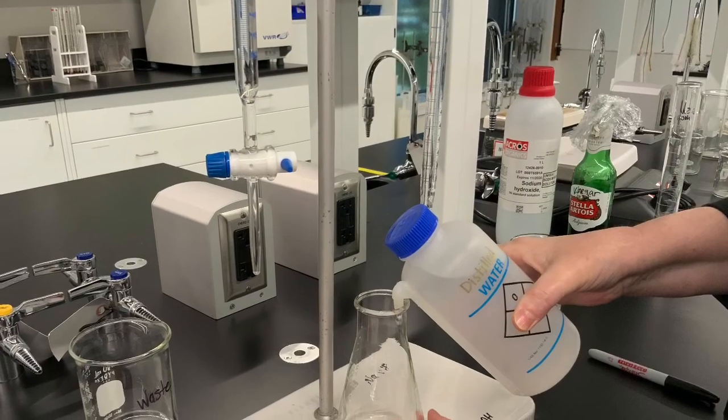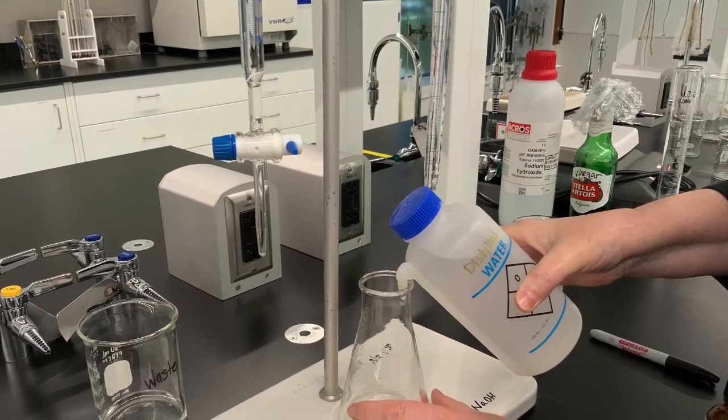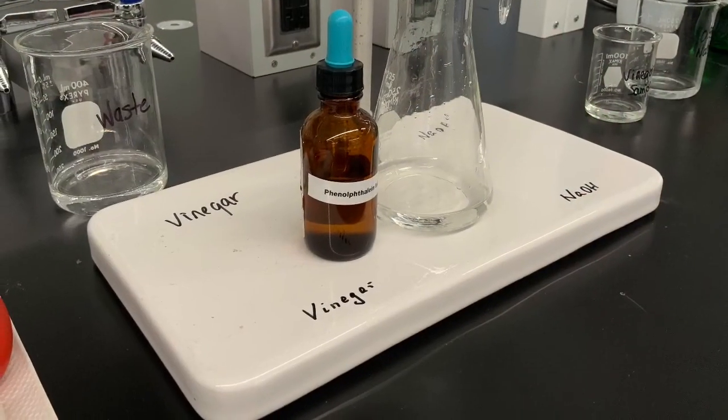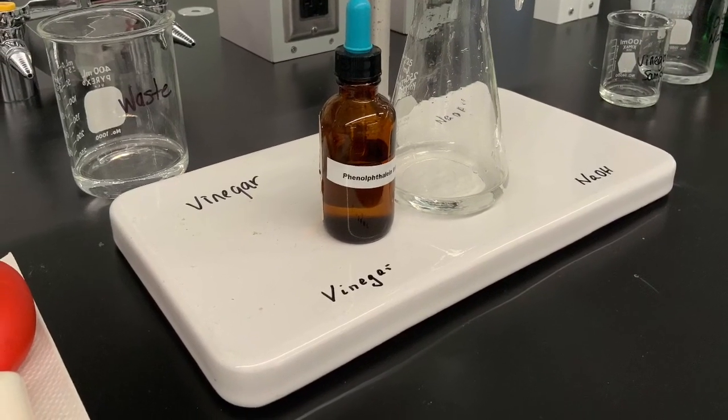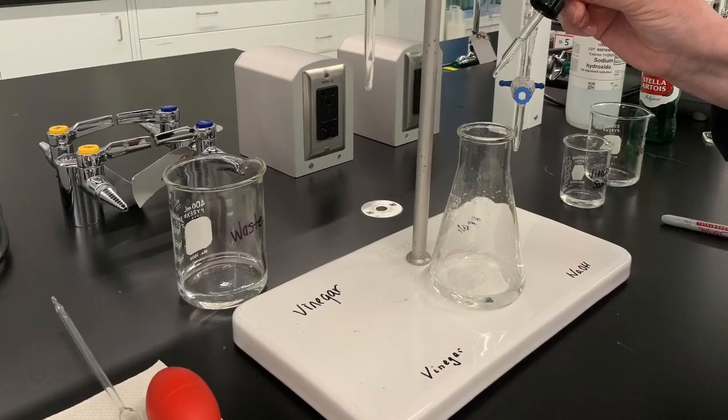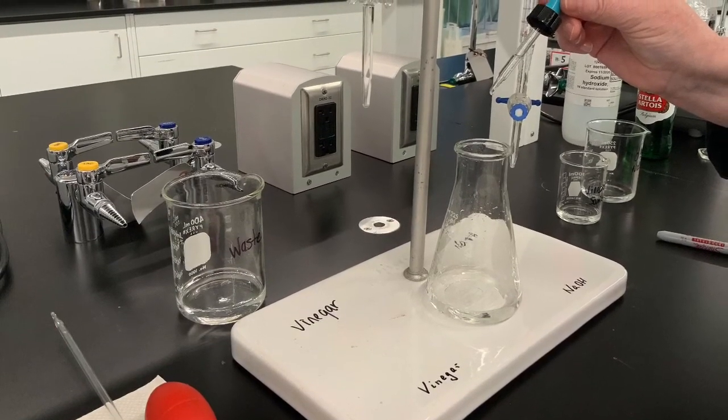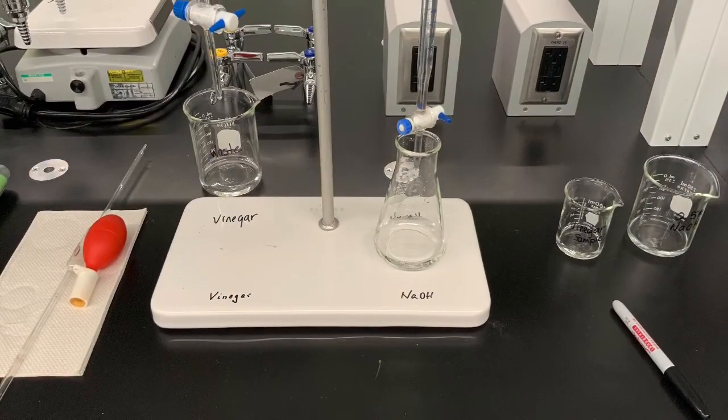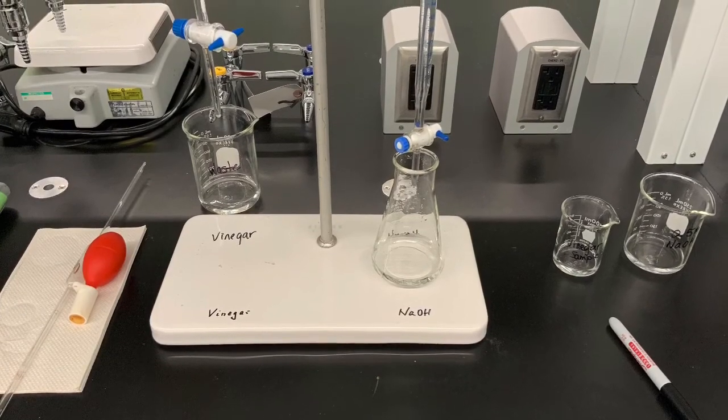Adding some distilled water and a couple of drops of the indicator phenolphthalein will get the vinegar solution ready for the titration with the sodium hydroxide solution.